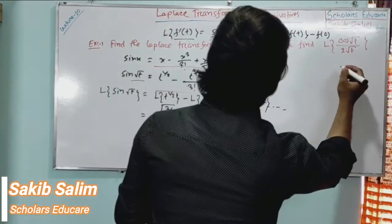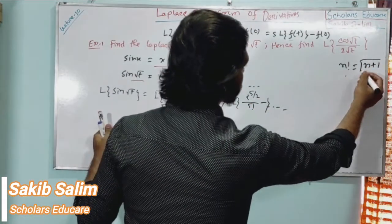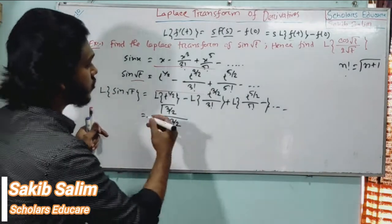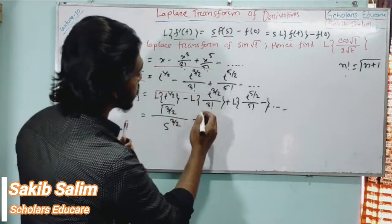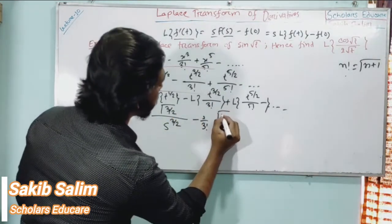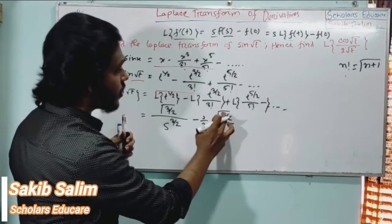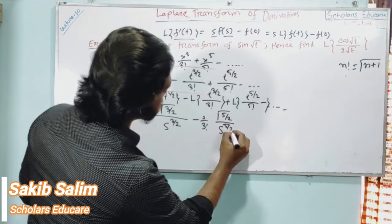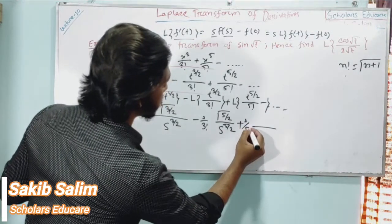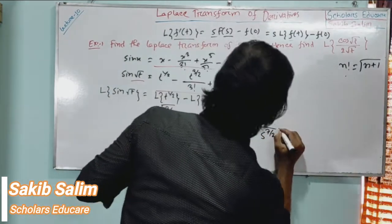Now, gamma notation shows that n factorial equals gamma(n+1). So half factorial equals gamma(1/2 + 1) equals gamma(3/2) divided by s^(3/2). Then for the next term, gamma(5/2) divided by s^(5/2), so 3/2 factorial equals gamma(3/2 + 1) equals gamma(5/2). We write s^(5/2) and t^(5/2) Laplace Transform terms. Then gamma(7/2) divided by s^(7/2) minus dot dot dot.